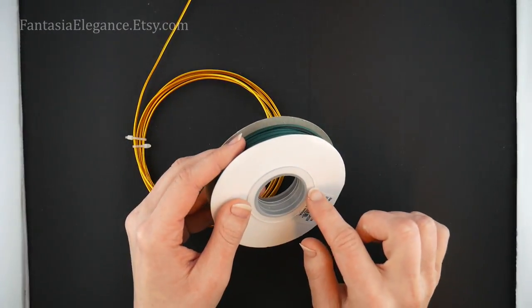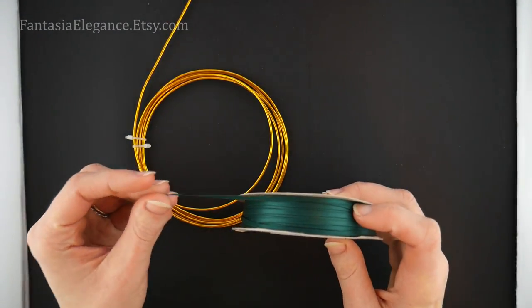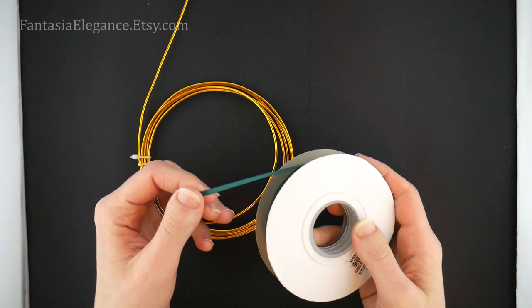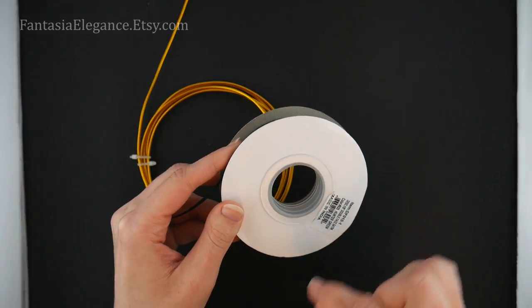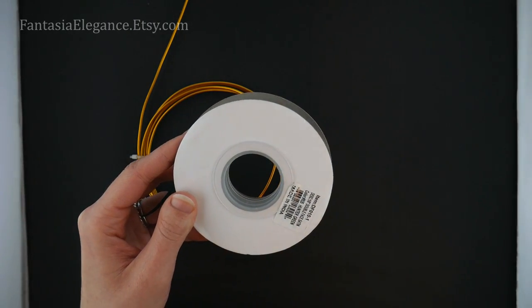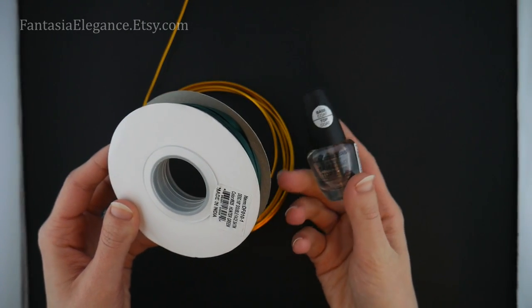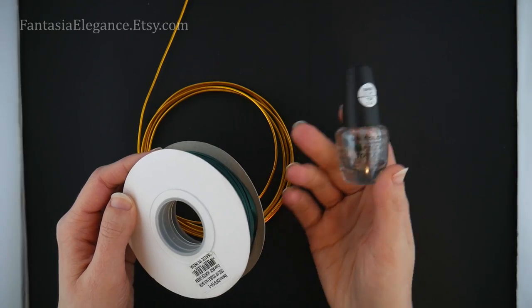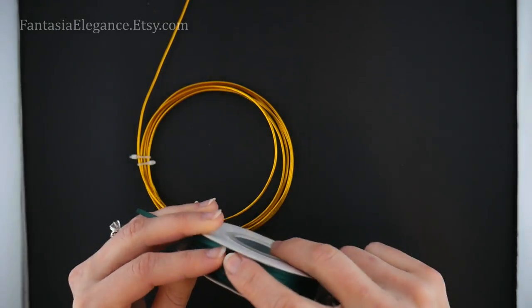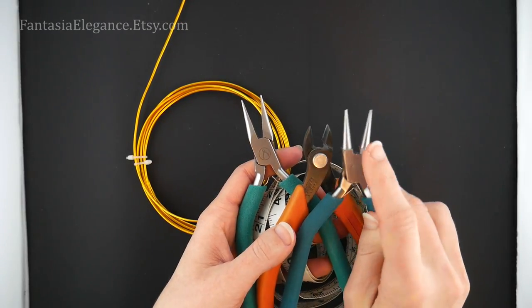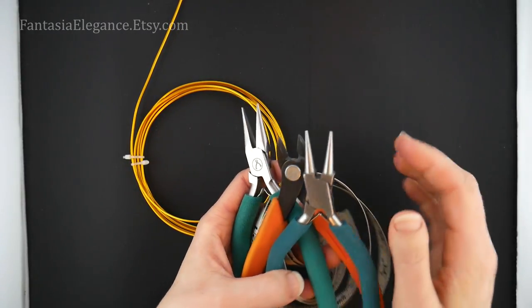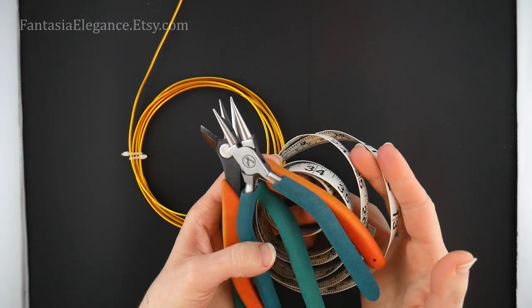If you want to add a ribbon hanger, which is optional, I'm using 1/8 inch wide satin ribbon which I got on Amazon. It comes in lots of different colors. To finish off the ribbon ends you'll want fray check or clear nail polish to keep it from fraying. For tools I'm using round nose pliers, flush cutters, chain nose pliers, and a tape measure to measure out our wire.